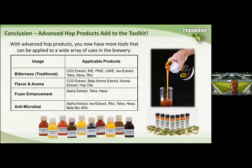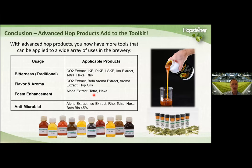In conclusion, when it comes to bittering, our traditional products are CO2 hop extract, Pike, LISKE, IsoExtract, Tetra, hexa, and rho. For flavor and aroma products, you still have bittering products like CO2 hop extract, but also beta aroma extract, aroma extract, and hop oils. For foam enhancing products, we have alpha extract, Tetra, and hexa. All bittering hop compounds are antimicrobial, including a product we make called Beta Bio 45% — a 45% solution of beta acids.